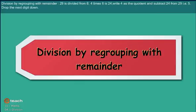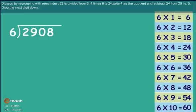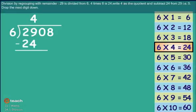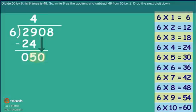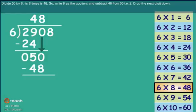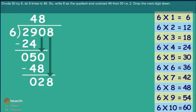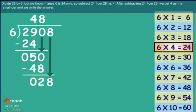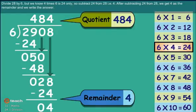Division by regrouping with remainder. 29 is divided by 6: 4 times 6 is 24, write 4 as quotient and subtract 24 from 29. Drop the next digit — divide 50 by 6: 8 times 6 is 48, write 8 as quotient and subtract 48 from 50. Drop the next digit — divide 28 by 6: 4 times 6 is 24, subtract 24 from 28 to get 4 as remainder. Write the answer.